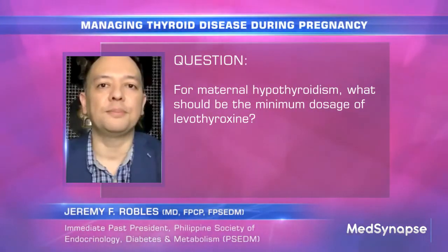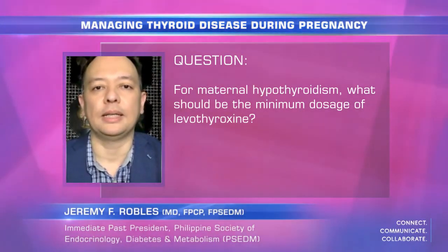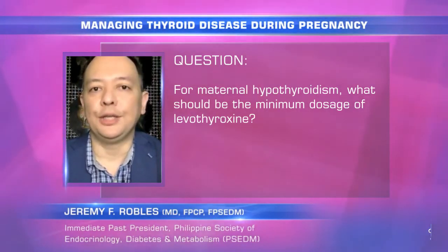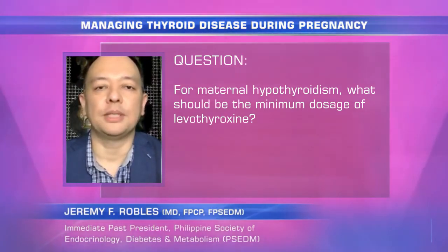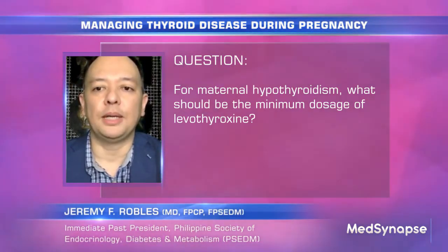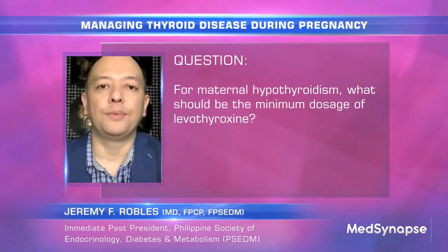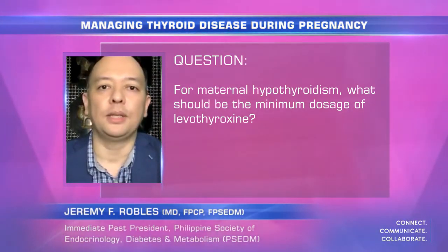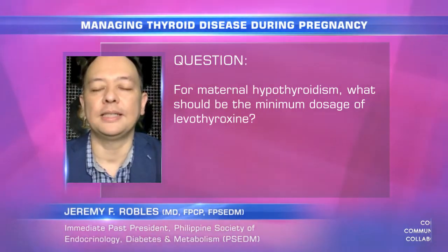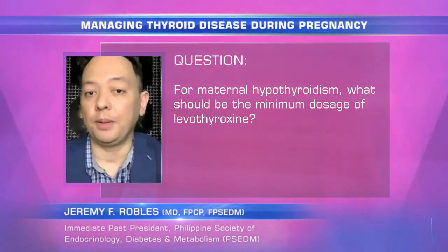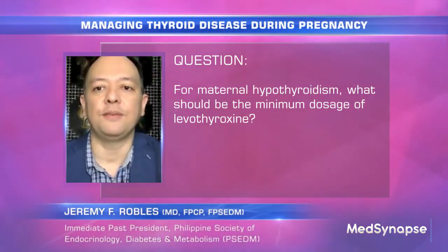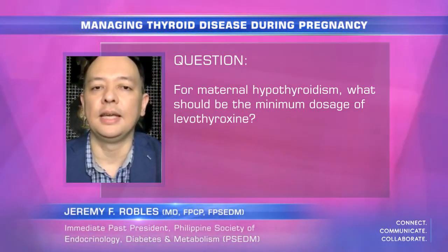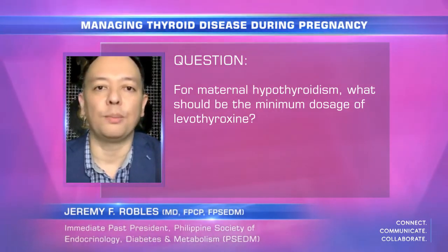Maternal hypothyroidism can be treated by replacement of thyroid hormones. We often use levothyroxine as the treatment. The usual replacement dose for hypothyroidism is about 1.2 micrograms per kilo per day or even higher, to achieve the appropriate level of maternal TSH. Normally we target anywhere between 2 to 2.5 during pregnancy, but you have to keep in mind that each population should have their own trimester-specific values. Here in the Philippines we follow these trimester-specific values to determine actual levels considered normal or abnormal.